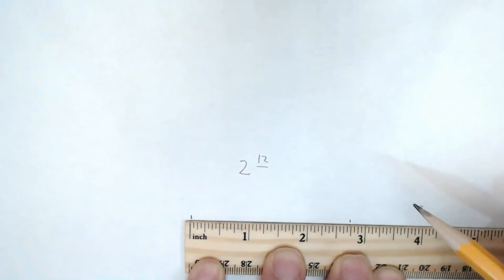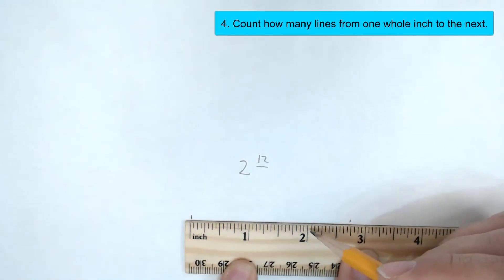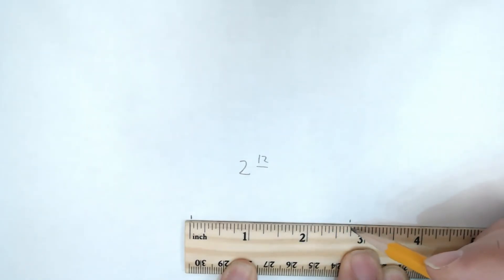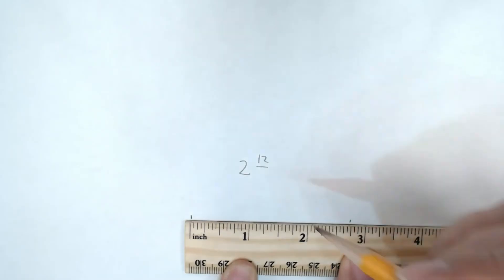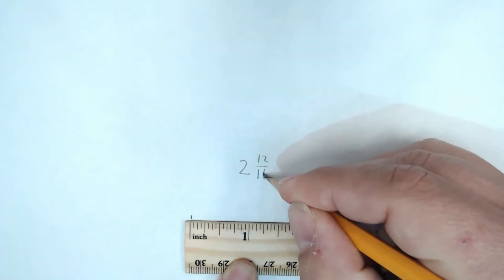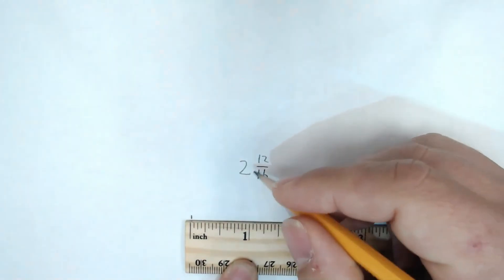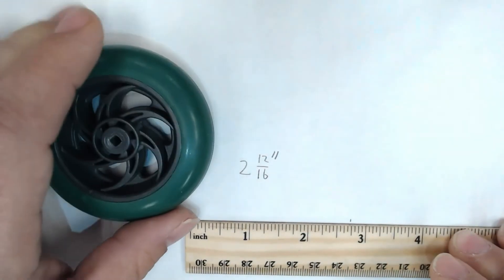The last step is to count how many lines go from one whole inch mark all the way to the next. Continuing from 12, I count 13, 14, 15, 16 — and that's the end of the whole inch. So I write 16 as the denominator. My measurement is 2 and 12/16 inches for the diameter of this wheel.